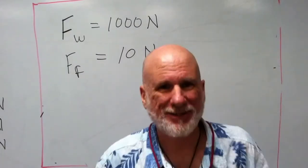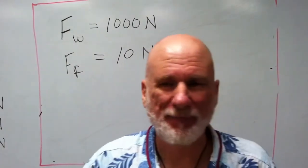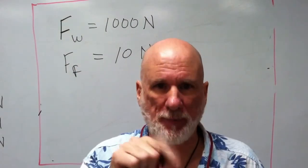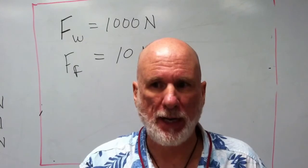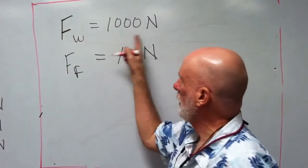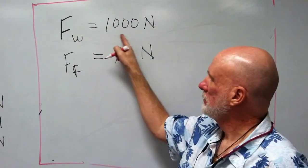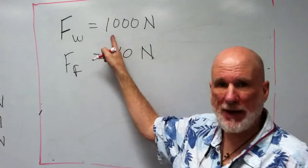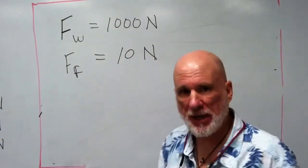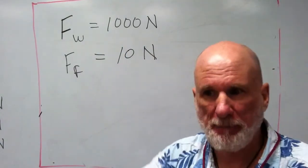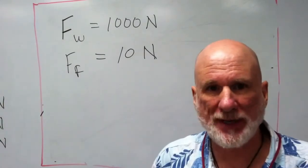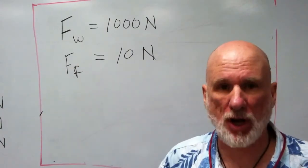We're going to do a quick problem where you're in the shower. A person weighs 1000 newtons, slips on a bar of soap — only 10 newtons of friction. They're going to fall over. What's the coefficient of friction?